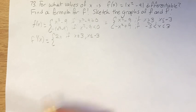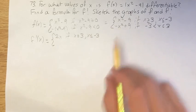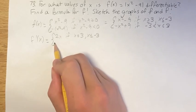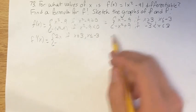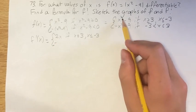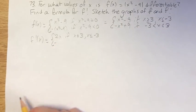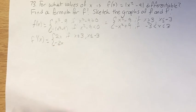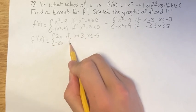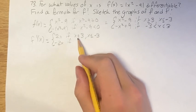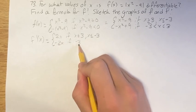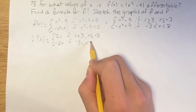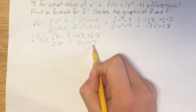Finding the derivative of the second piece: we have negative x squared, and the derivative of x squared is 2x, so that's negative 2x. This applies if negative 3 is less than x is less than 3.